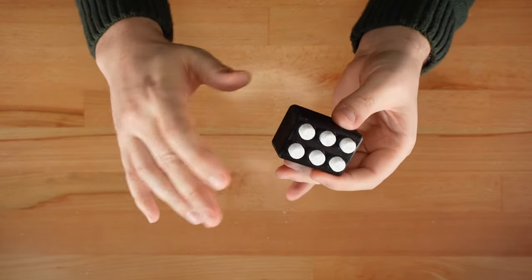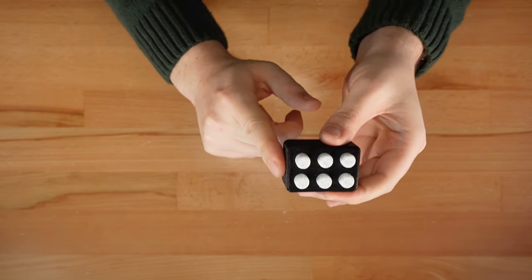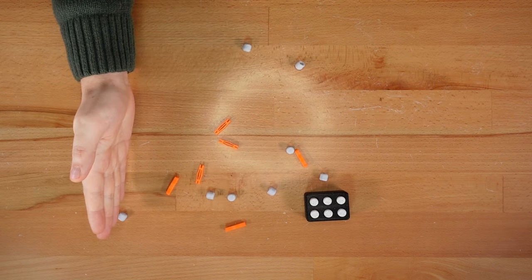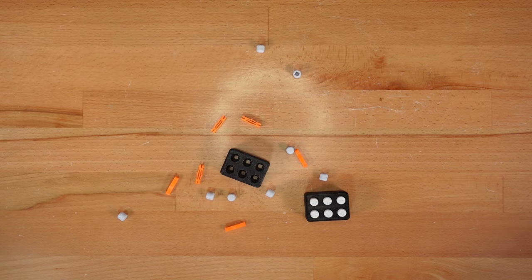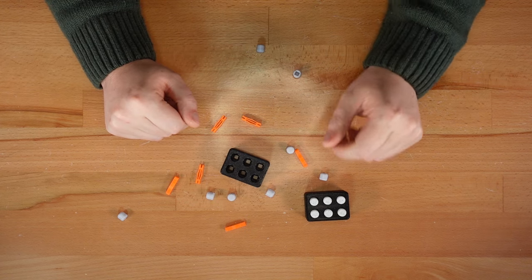First, the design is way too complex. Each cell has 19 individual parts: 6 springs, 12 button caps, and a case to hold everything together. That's a lot to print and assemble, especially if you're making multiple copies.